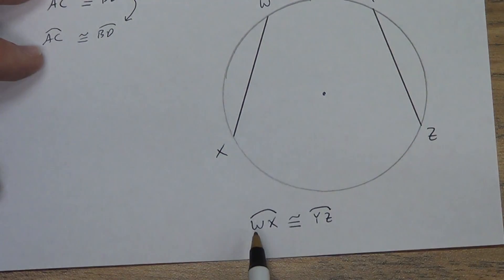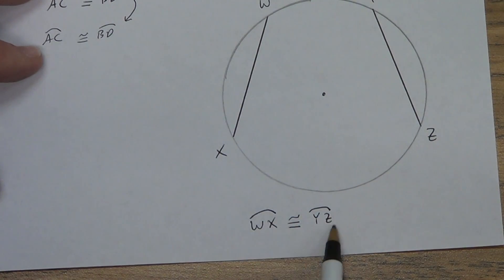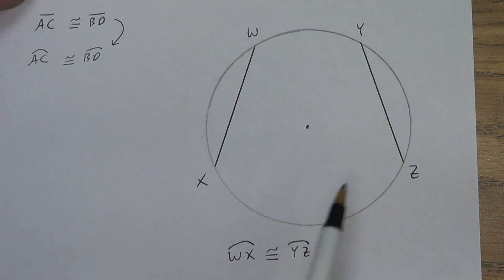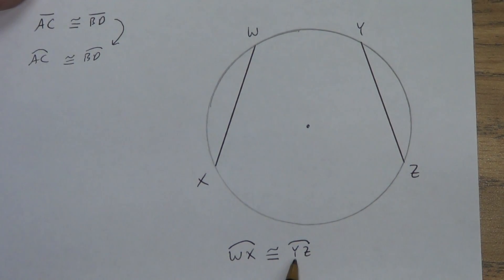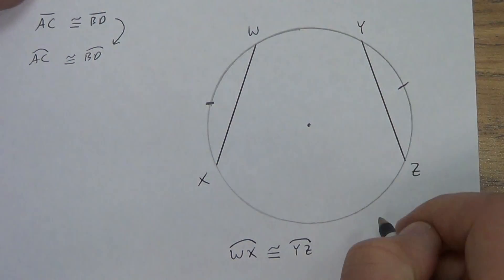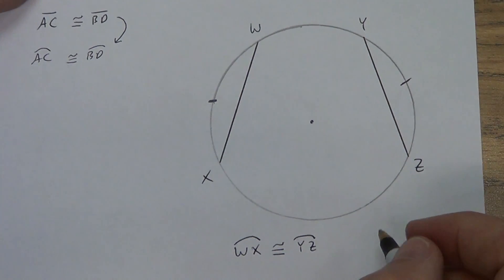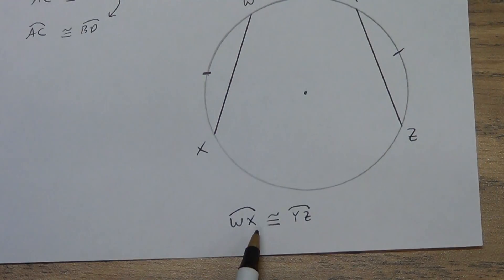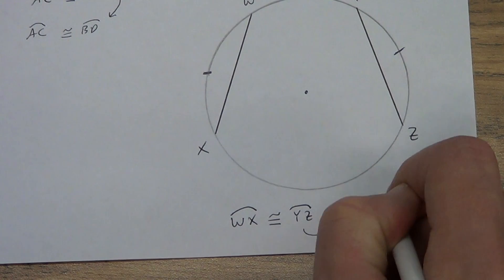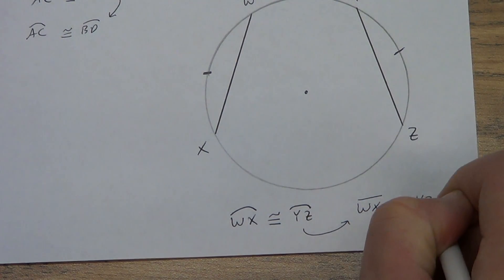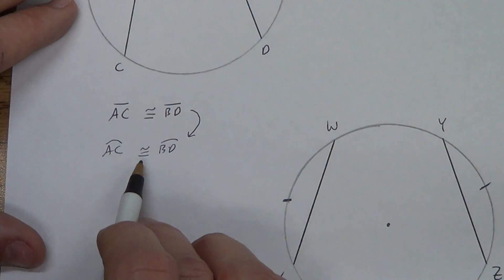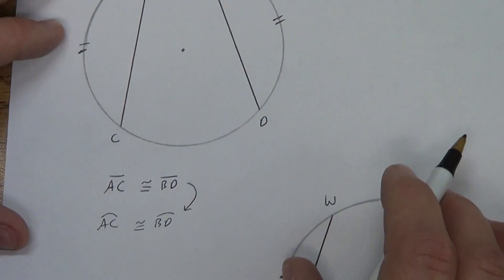If we look at it the other way, this time I'm told that the arcs are congruent. If and only if works both ways. So here we said if the chords are congruent, then the arcs are congruent. If the arcs are congruent, then the chords are congruent. So I can go from arc to chord, or I can go from chord to arc. It's very simple.